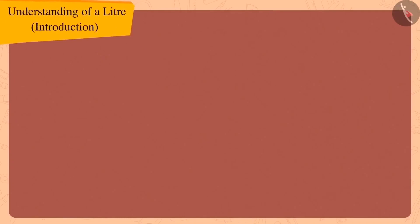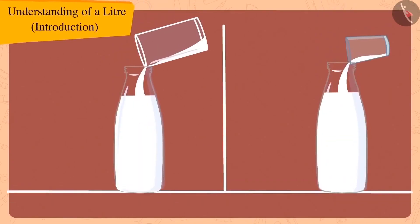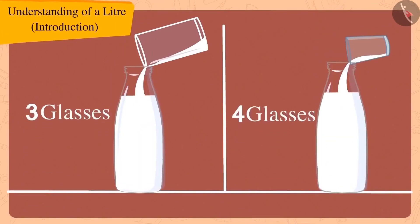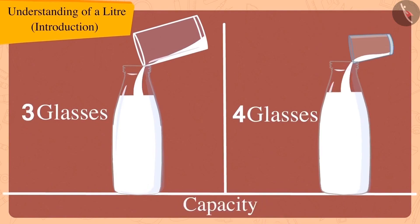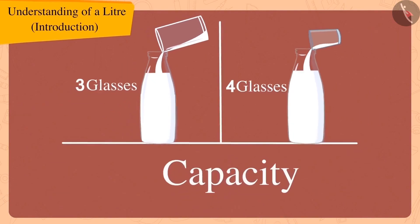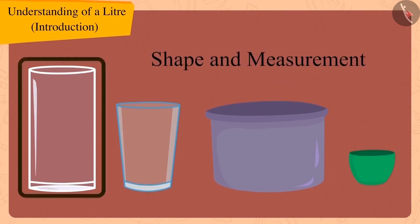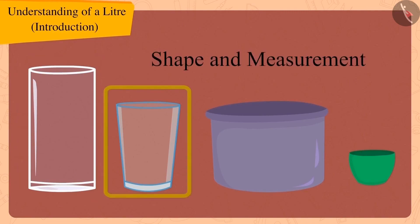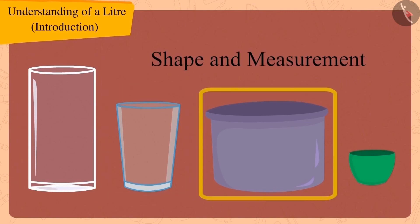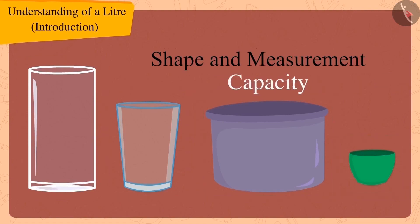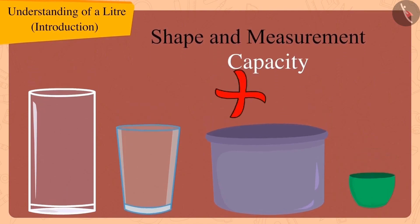Just as we saw earlier, both times Golu used a glass to measure the capacity of other utensils. But a glass or any utensil may be of one kind — due to different shapes and measurements, we cannot use them to measure the capacity of other utensils.